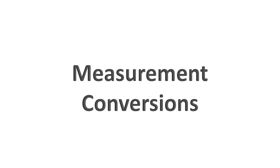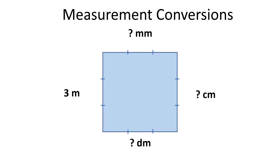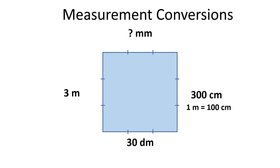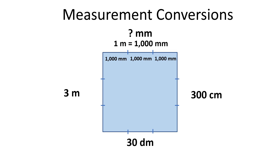Let's see how we can convert one unit of measurement into a different unit of measurement. Here we have a square with a side length of 3 meters. How much is that in decimeters? One meter is equal to 10 decimeters, and we have 3 meters, so 3 meters equals 30 decimeters. In centimeters: one meter is equal to 100 centimeters, so 3 meters equals 300 centimeters. In millimeters: one meter is equal to 1,000 millimeters, so 3 meters equals 3,000 millimeters.